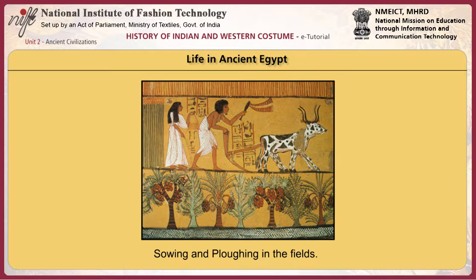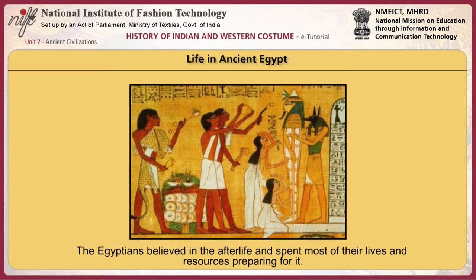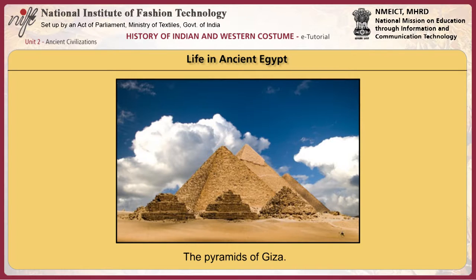Scribes were middle-class Egyptians who learned from an early age the complicated pictorial writing called hieroglyphs and recorded virtually everything. The Egyptian people were very religious. They believed in the afterlife and spent most of their lives and resources preparing for it. They had the bodies of the dead embalmed and preserved for the afterlife. Most of what we know about ancient Egyptians is evidence found in their tombs and gravesites. The average Egyptian only managed to send food, drink and clothes to the afterlife for their loved ones.